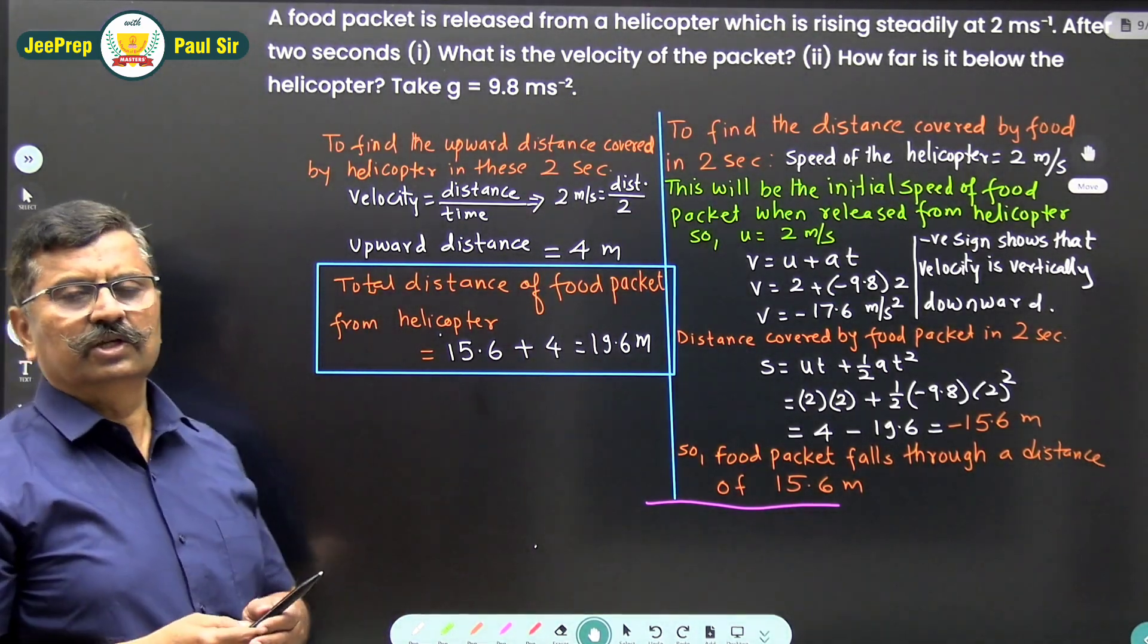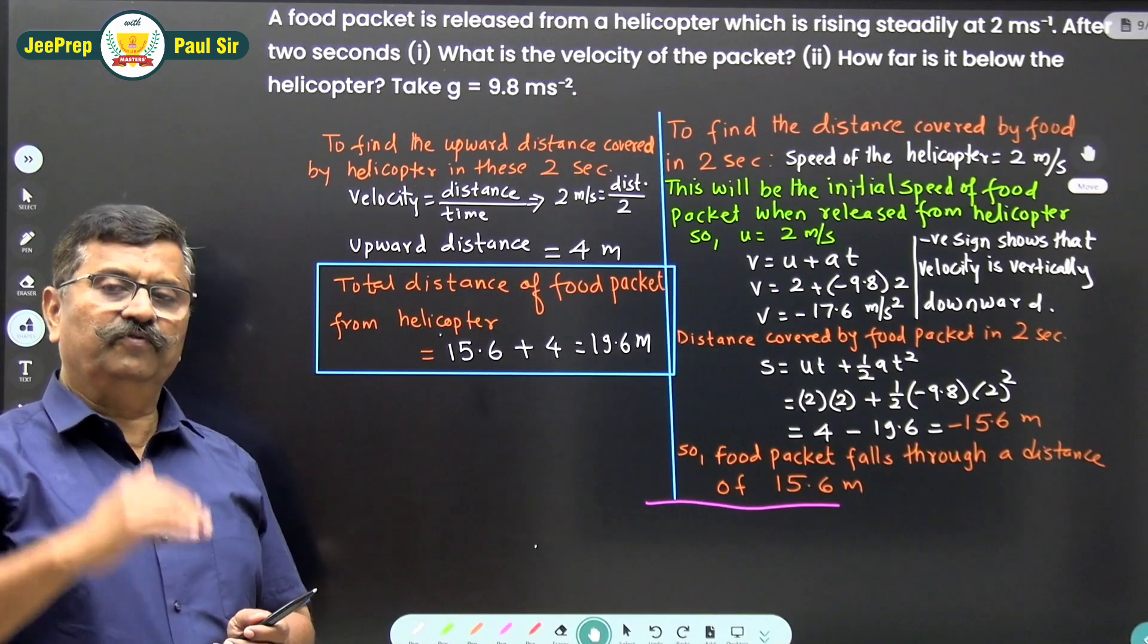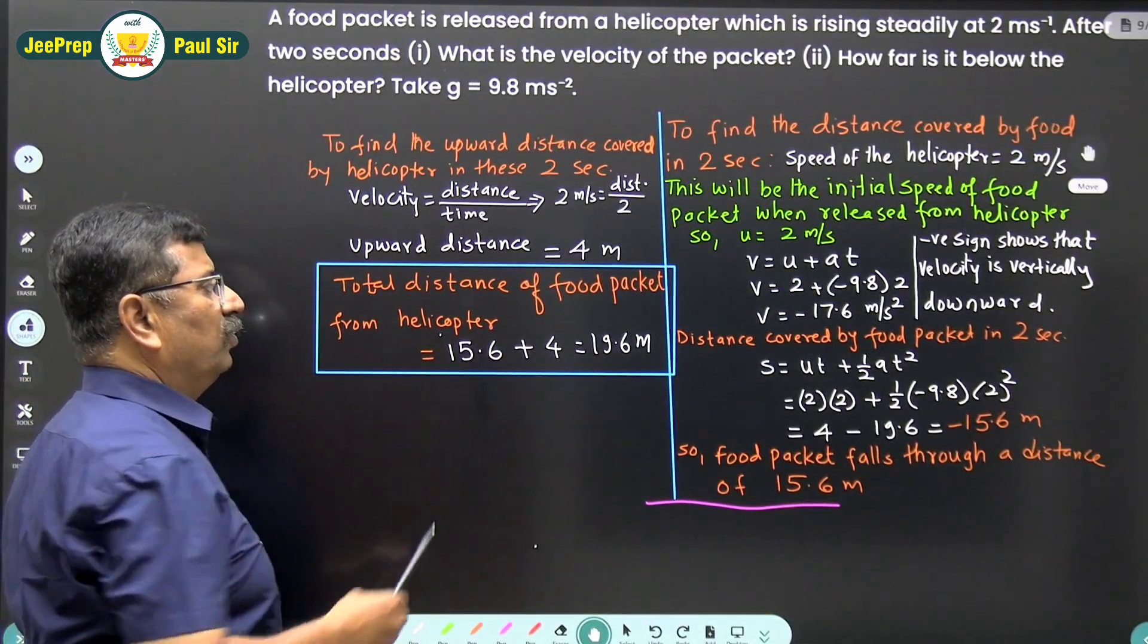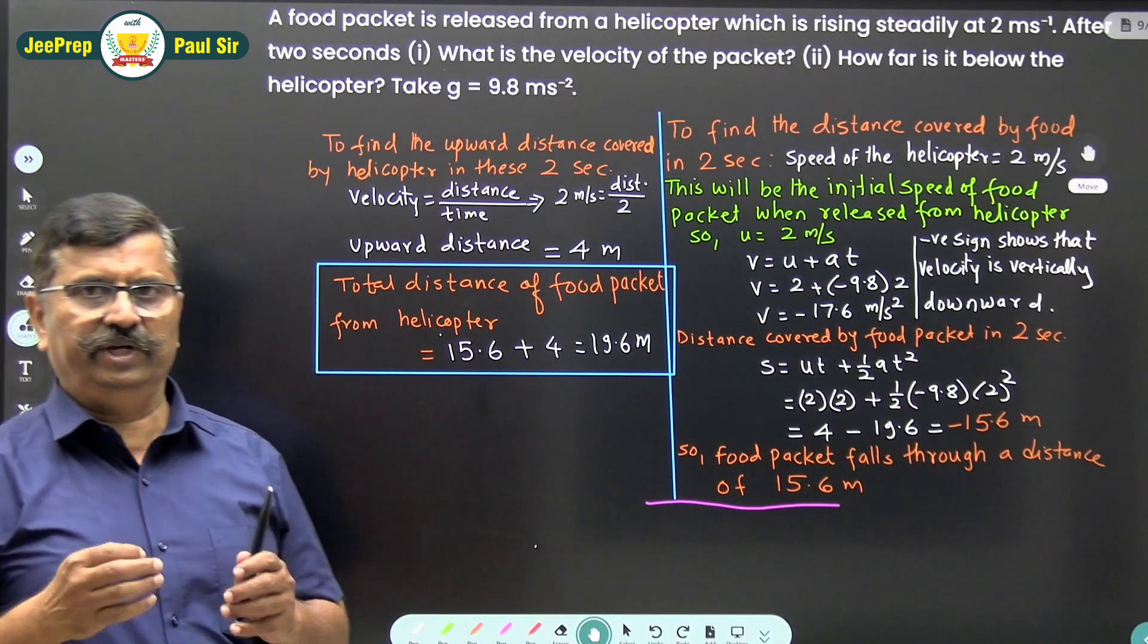Hence, the total distance of the food packet from the helicopter is 15.6 + 4 = 19.6 meters.